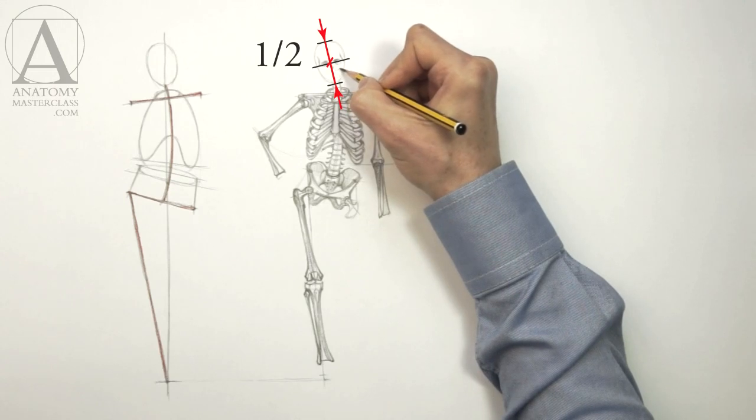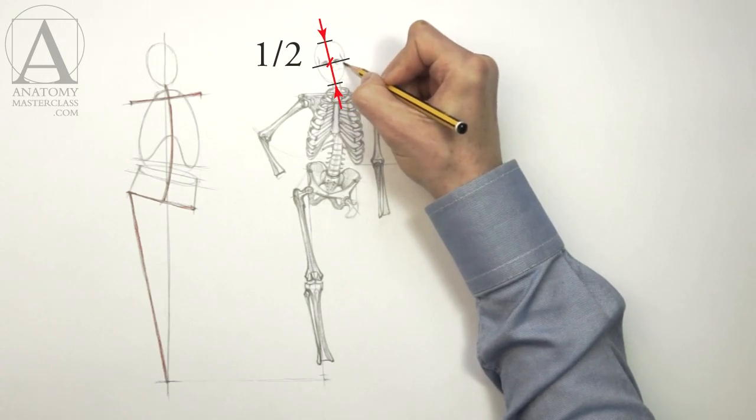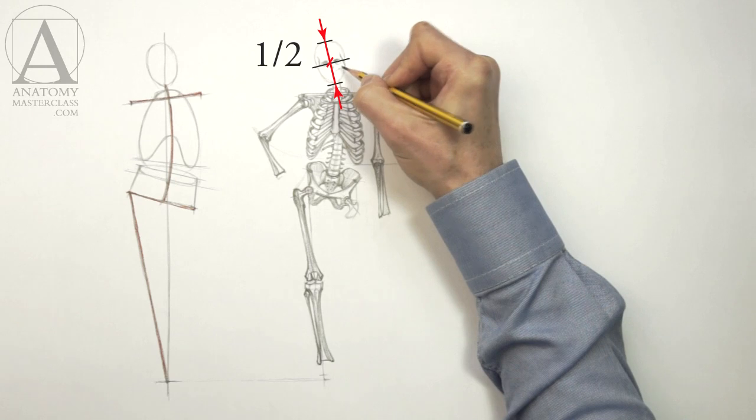The eye sockets are located in the middle of the head. Avoid the amateur's mistake of placing them too high.